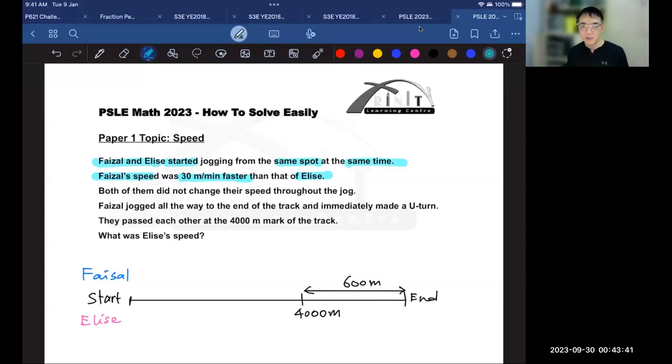So what does this mean? It means that every minute that passes, Faisal will be 30 meters ahead of Elise. He will cover 30 extra meters every minute.